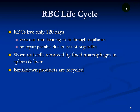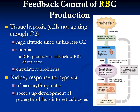The life cycle of a red blood cell — they only live about 120 days. They wear out from bending and trying to fit through the capillaries, and there's no repair possible because there are no organelles to repair them. These worn-out cells are removed by macrophages in the spleen and the liver. These are fixed macrophages — large cells that do phagocytosis — and all the breakdown products are just recycled.